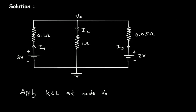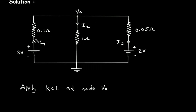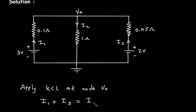we apply KCL, that is Kirchhoff's Current Law, at node VA. According to KCL, the summation of all currents entering a node is equal to the summation of all currents leaving the node. The entering currents are I1 and I3, and the current I2 is leaving from this node. So: I1 plus I3 is equal to I2.